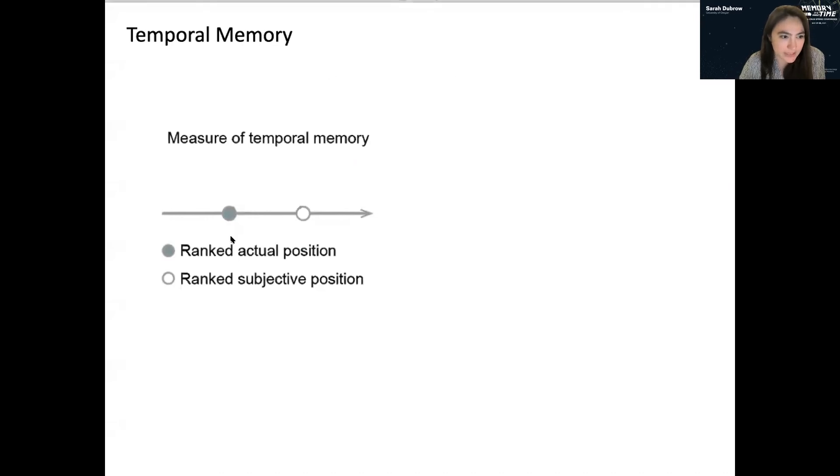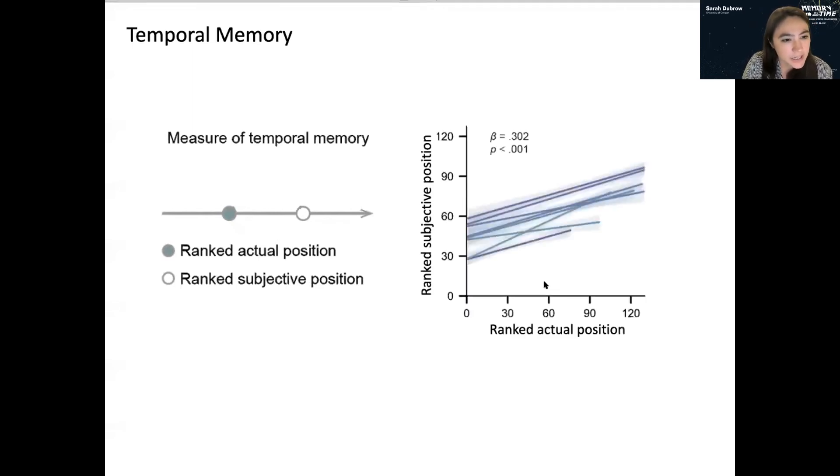What we're really interested in is temporal memory. So to measure temporal memory, we can take the actual position and compare it to the response, the positional response, the subjective position. And we adjusted them to rank just to account for bias in the use of the number line. So people tend to be really compressed in their usage of the number line. So to deal with bias, we just converted it to rank. And what we can do is just correlate these to see if there is above chance memory. We would expect that their subjective position be correlated with the actual position. And indeed, that is what we find at the group level. And I think it's significant in seven out of eight of the subjects and it's trending in the last subject. So I think this is pretty exciting that we can get above chance temporal memory across these really long time scales. And again, this is incidental in the sense that, yes, they're tested for memory in the continuous recognition task, but they never know that they're going to be tested on temporal memory.